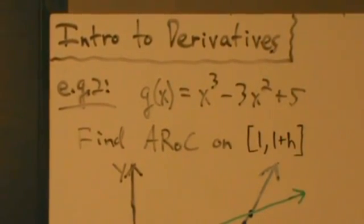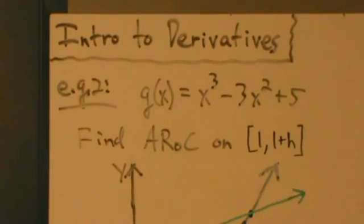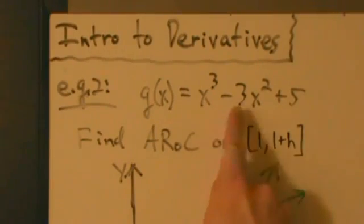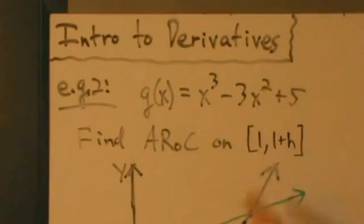This is part 2 of 2.5 parts for the introduction to the derivative. Let's go ahead and do example 2. We have our function g of x equals x cubed minus 3x squared plus 5.